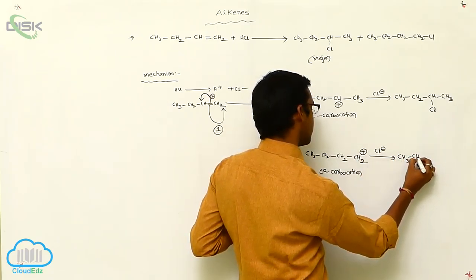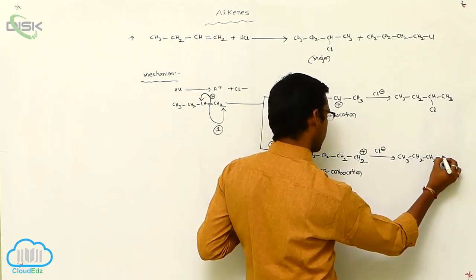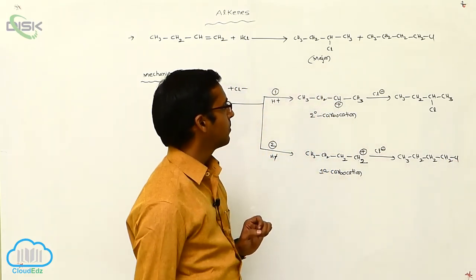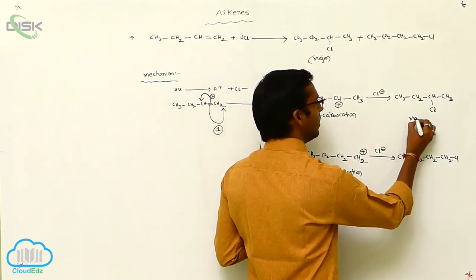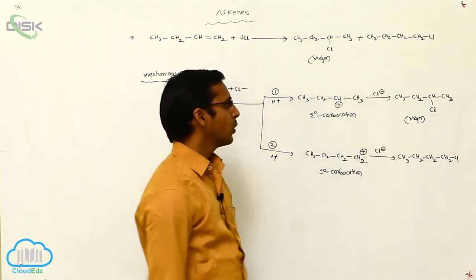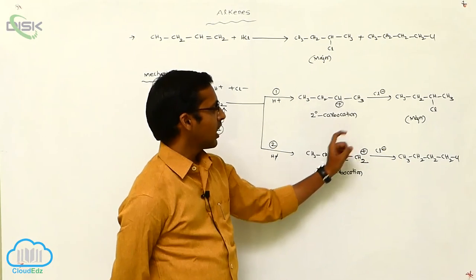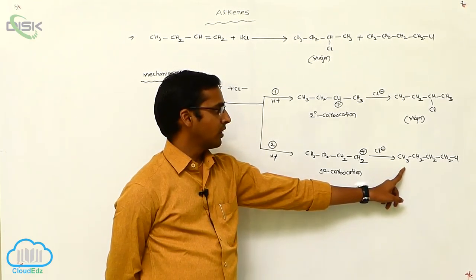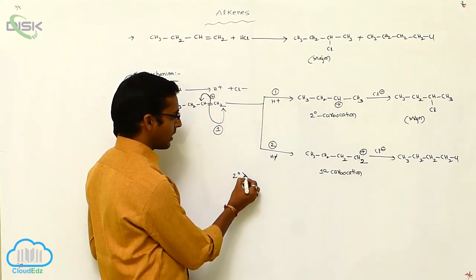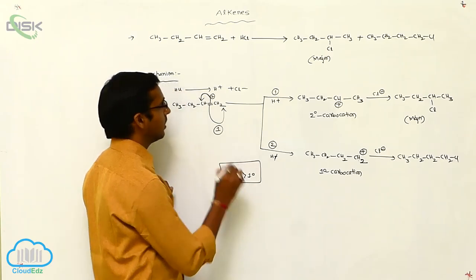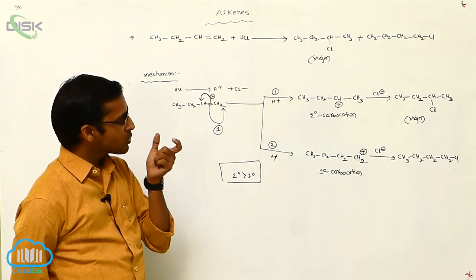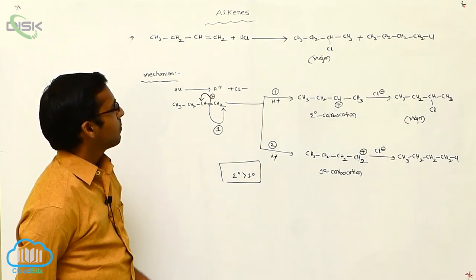The secondary carbocation, this is your positive charge. The positive charge is reacted with negative charged particle. That is attached to the less number of hydrogen atoms: CH₃-CH₂-CH(Cl)-CH₃ and CH₃-CH₂-CH₂-CH₂-Cl. So two types of products are formed in this. This is your major product, because the 2-chlorobutane is produced via secondary carbocation.